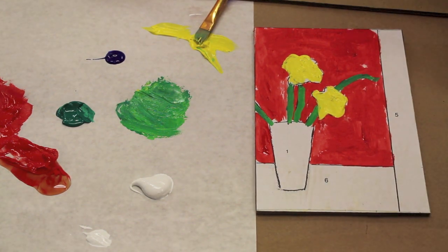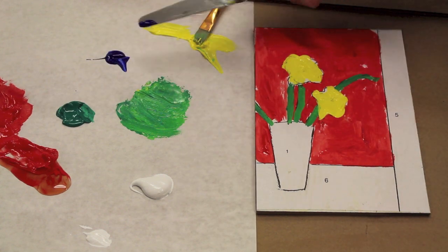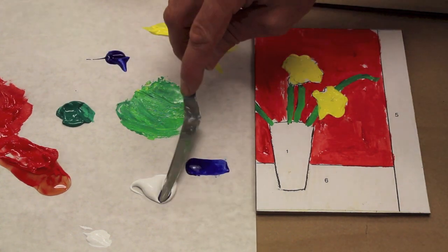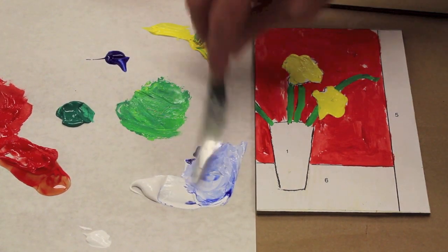The ground here, what the vase is sitting on, I'm using blue. This is ultramarine blue. I'll use a little blue, a little white, and get this light blue.